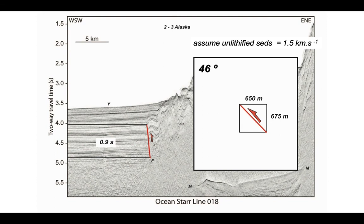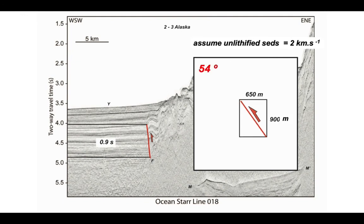So we have three values for the dip of the fault plane. It's highly unlikely the material is fully lithified sandstone, since it includes material at the modern seabed — it's much more likely to be un-lithified sediments. Going for the slightly higher value, my preferred interpretation is that the dip of the fault plane is about 54 degrees. That's how we can work out the true orientation of inclined features on seismic profiles.